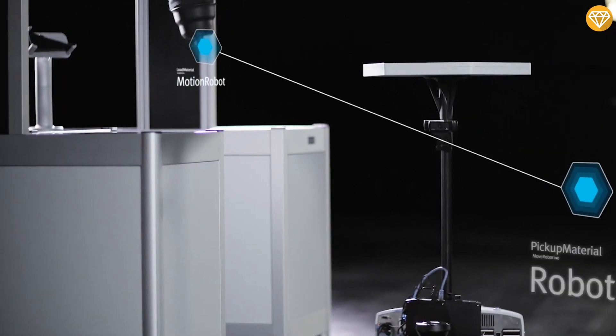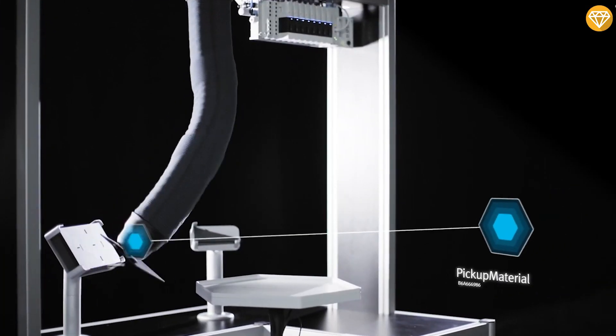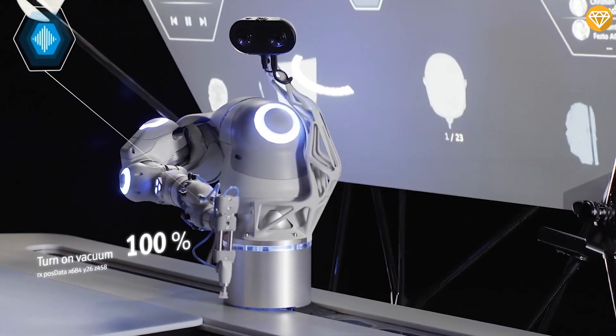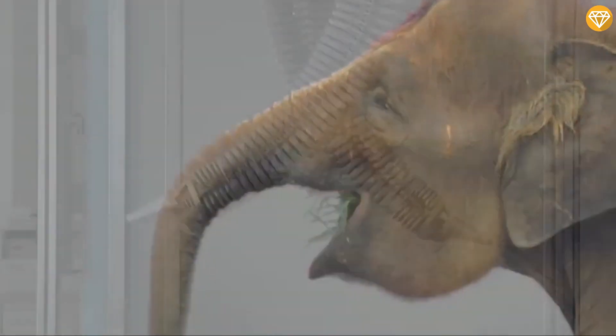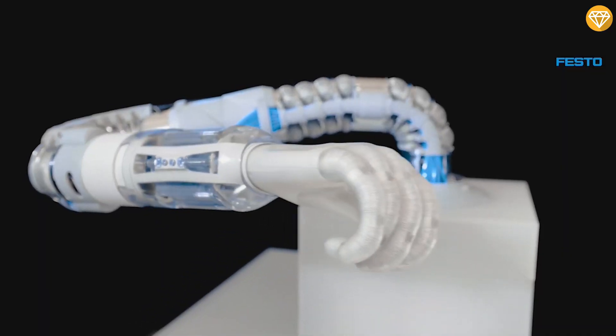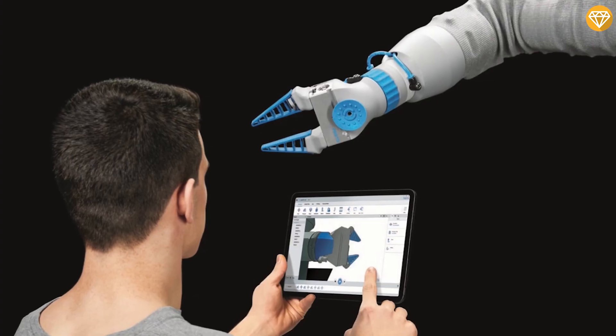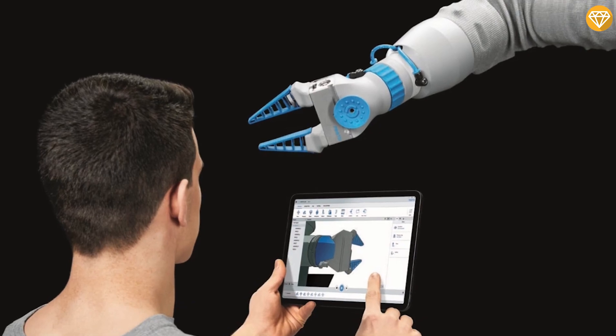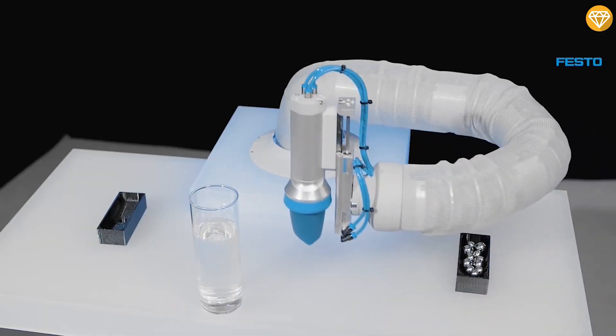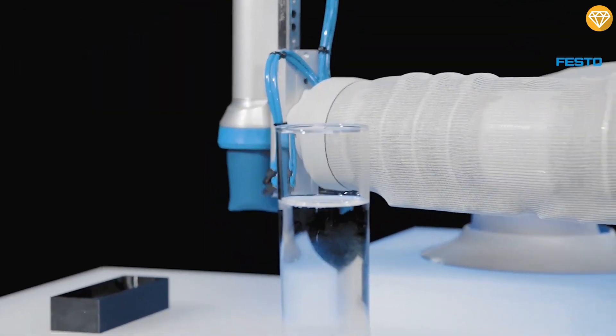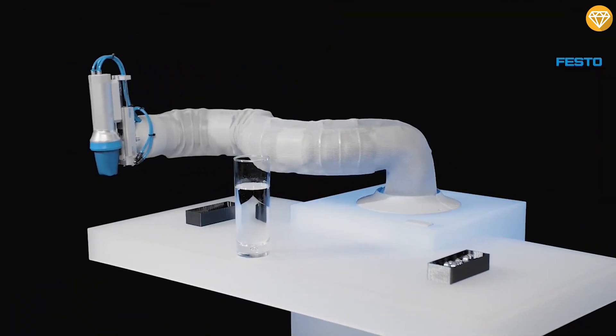It eliminates the need for complex safety devices, reducing conversion times and enabling flexible use in multiple locations. Inspired by the elephant's trunk, it achieves smooth motion sequences. The robot's intuitive software interface allows for easy operation on a tablet, while digitized pneumatics ensure precise movements. The Bionic Soft Arm is a versatile and efficient solution.